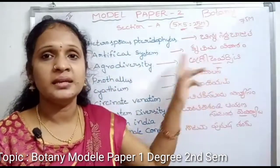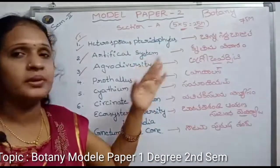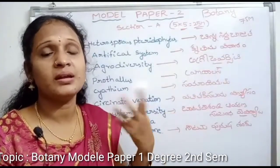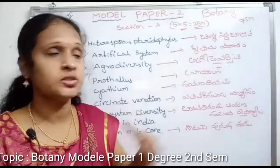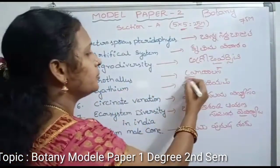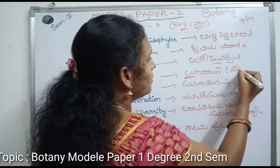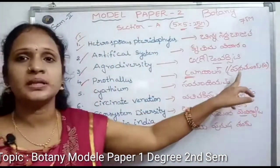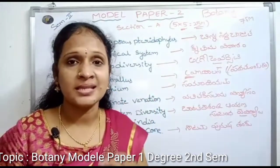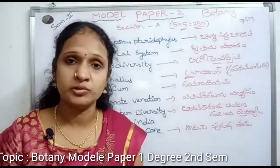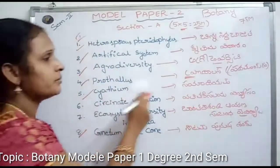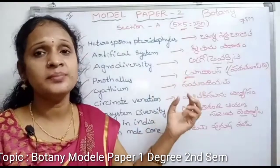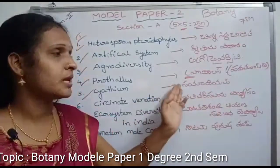Agro-diversity is the last 5th unit. This is the general topic of Agro-diversity. We will explain how many plants are included. The first unit of Agro-diversity is called Syaathya. We have to go to the next lesson.